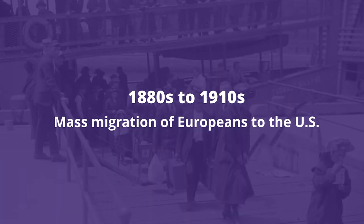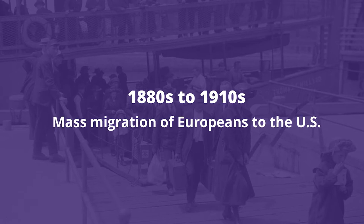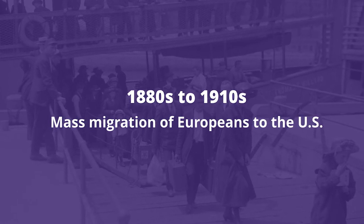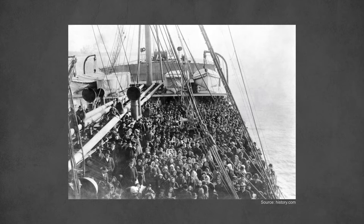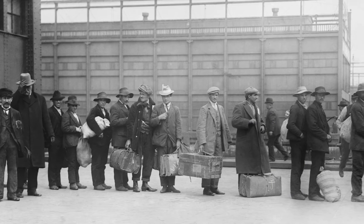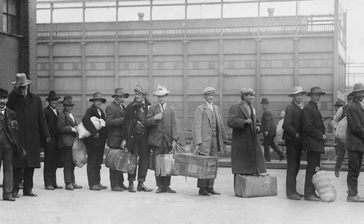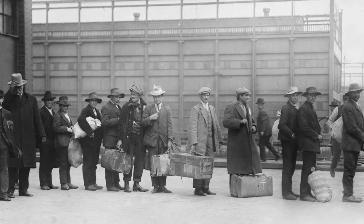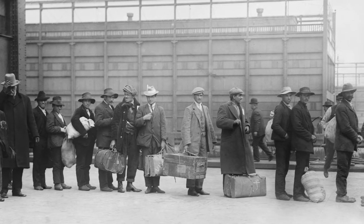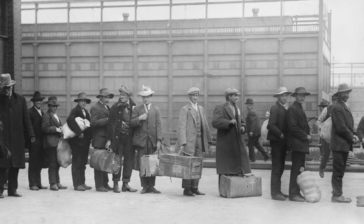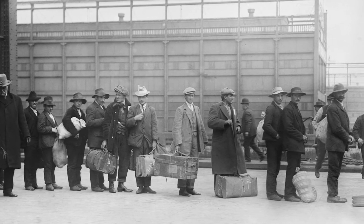During the 1880s and 1910s, there was a mass migration of Europeans to the United States. An estimated 20 million immigrants from Europe arrived during this time period. With such a high influx of immigrants, particularly coming from southern and eastern Europe, this changed the demographics of the United States — in particular, we're talking about cities.